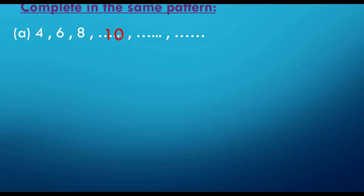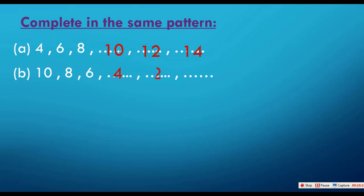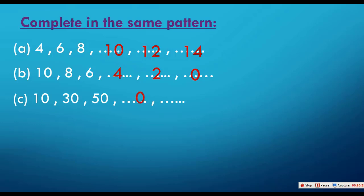Complete the same pattern. Four, six, eight — excellent, we add 2 each time: 10, 12, 14. Next pattern: 10, 8, 6 — we subtract 2 each time: 10 minus 2 equals 8, minus 2 equals 6, minus 2 equals 4, minus 2 equals 2, minus 2 equals 0. Next: 10, 30, 50 — well done, add 20 each time: 70, 90.